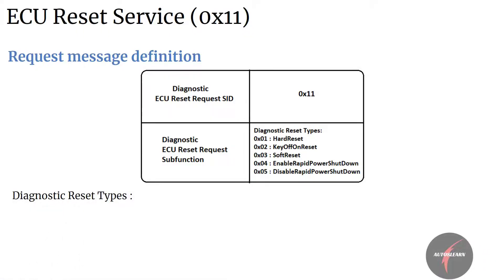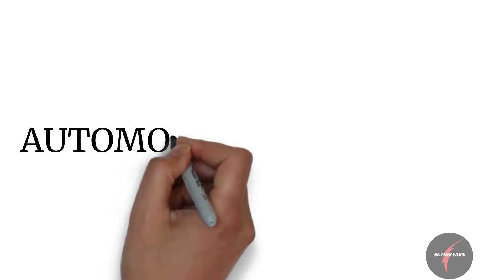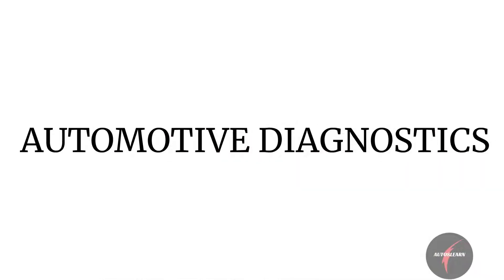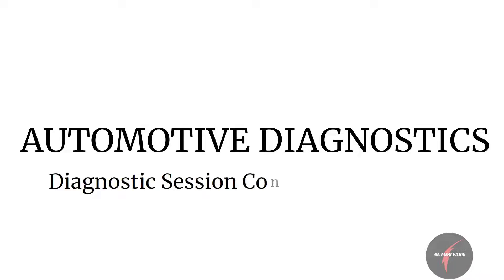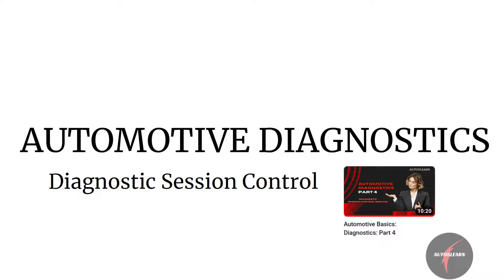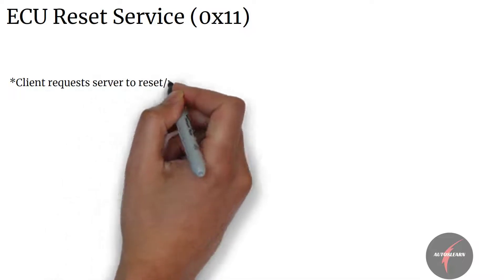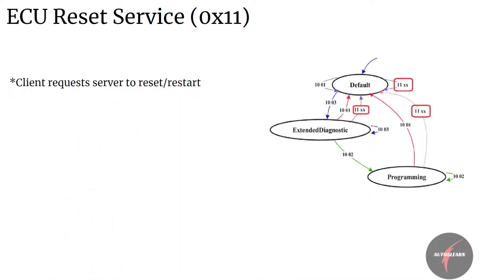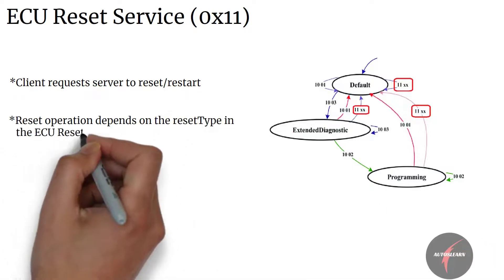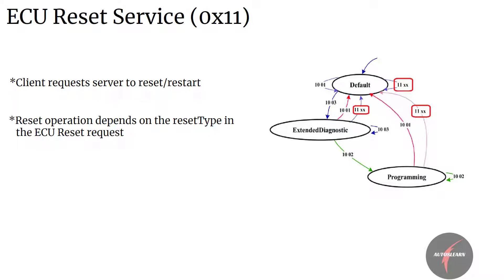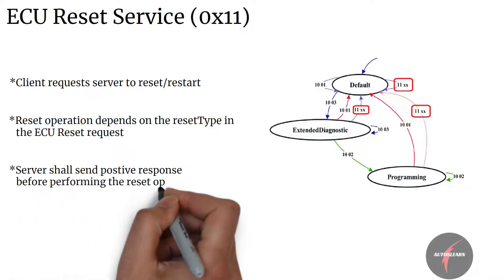In the last video we had a look into the first diagnostic service — diagnostic session control service. Let's now get into details of our next diagnostic service: that's the ECU Reset service, service 11. The ECU Reset service is used by a client to request a server reset or restart based on the reset type embedded in the request. The server shall perform the reset accordingly and shall send a positive response before performing the reset operation.